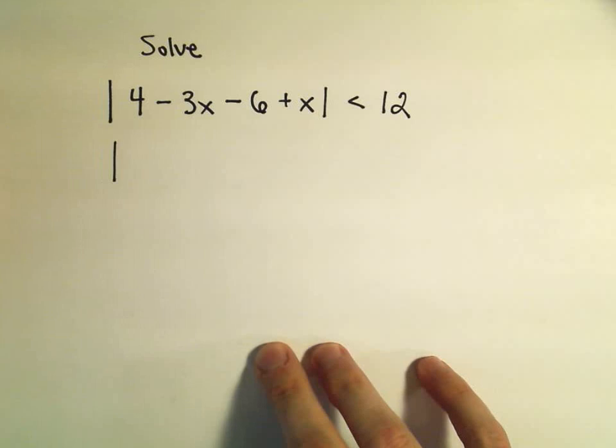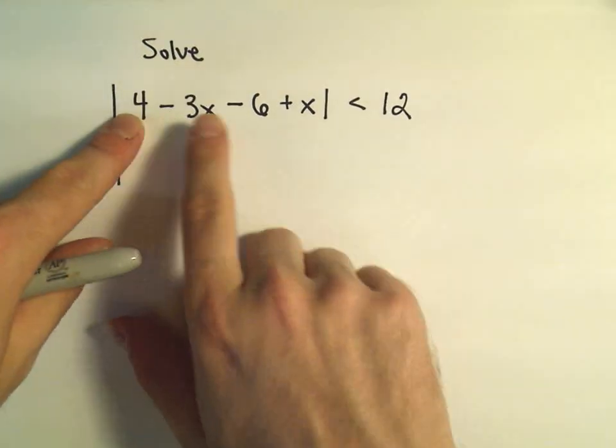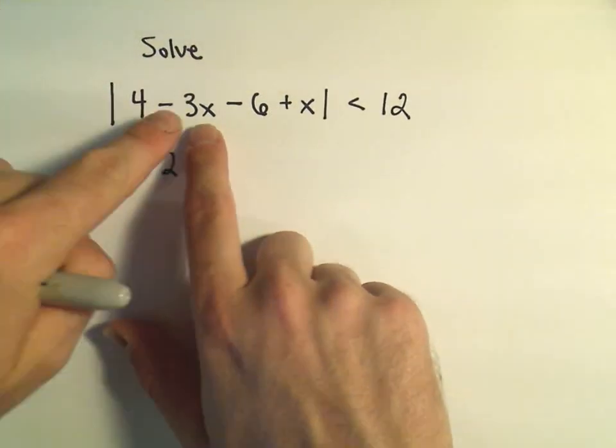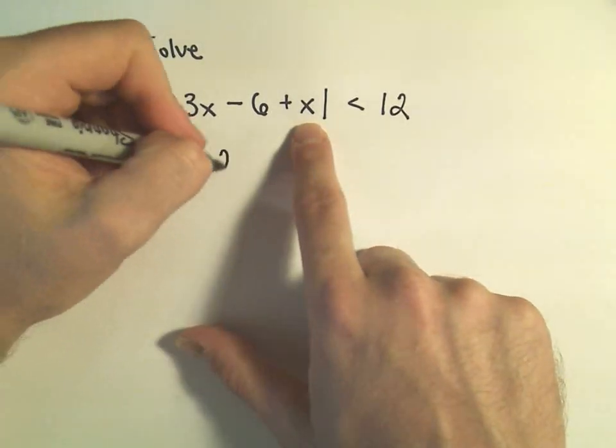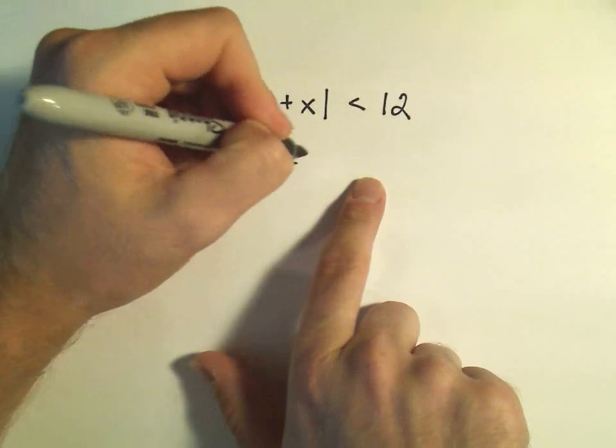First, I'm going to simplify inside the absolute value. 4 minus 6 would be negative 2. Negative 3x plus a positive x will be a negative 2x less than 12.